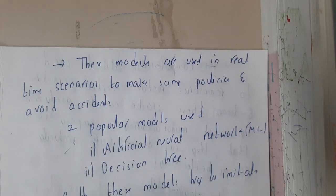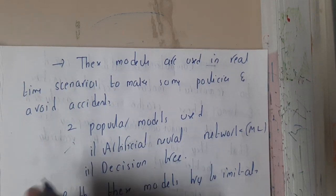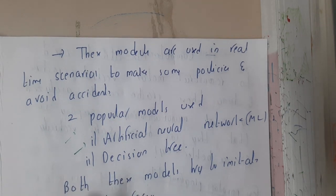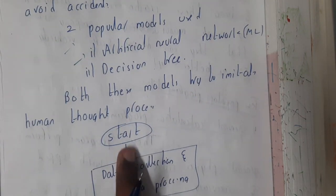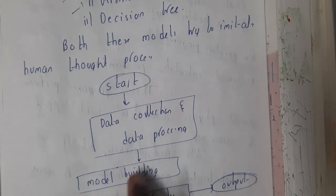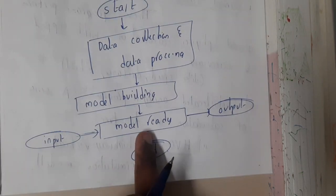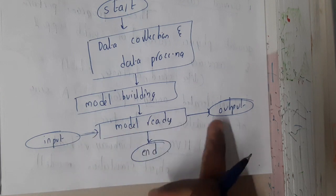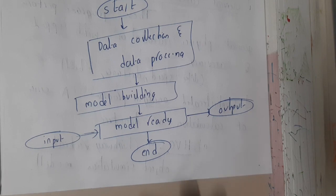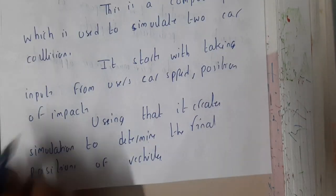The two popular models used are artificial neural networks — essentially machine learning — and decision trees to make decisions. The simple workflow involves collecting data, performing processing, and then building the model. Once the model is ready, you give it input and expect an output. This is the basic flow diagram for the analysis.